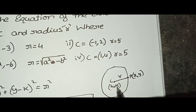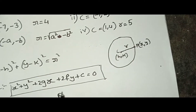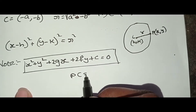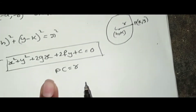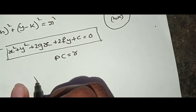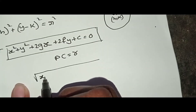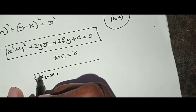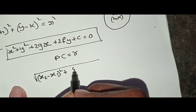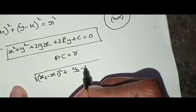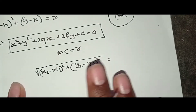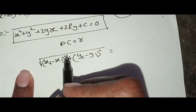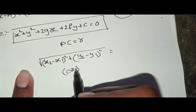PC is equal to r. This means the distance PC equals the radius. Using the distance formula: the square root of (x₂ minus x₁)² plus (y₂ minus y₁)² equals r.